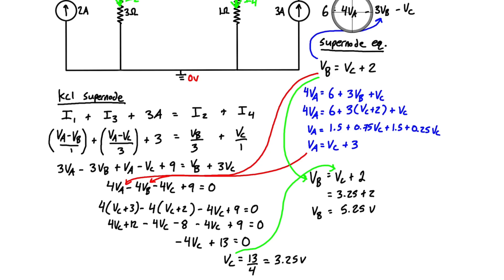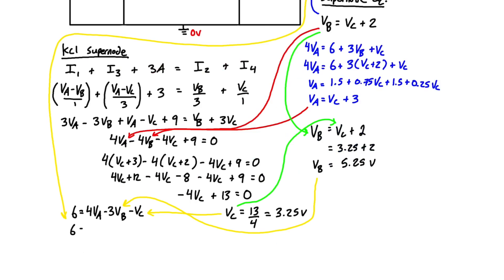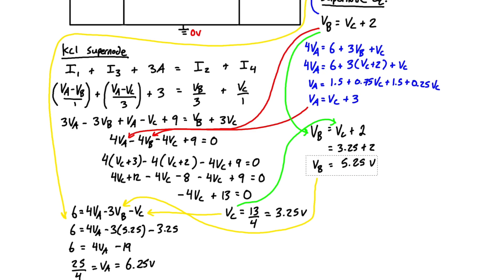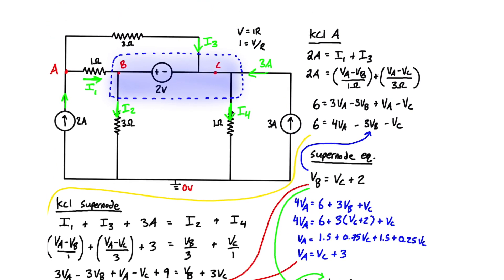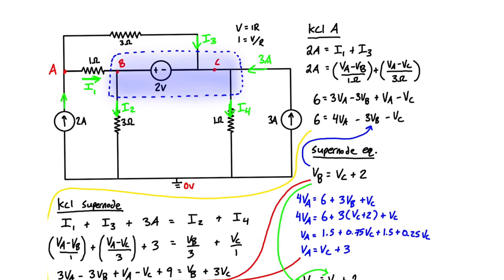Now that we have Vb and Vc, we plug them into the KCL at node A expression: 6 = 4Va − 3(5.25) − 3.25, giving 6 = 4Va − 19, so Va = 25/4 = 6.25 volts. To summarize: Va = 6.25 V, Vb = 5.25 V, Vc = 3.25 V. The supernode method is used when two unknown nodes are separated by a voltage source — connect them, write equal equations to unknowns, and solve.